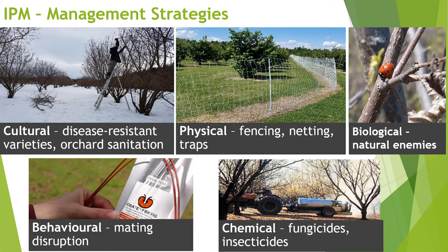Finally, there's chemical control — using fungicides, insecticides, and herbicides — and that is an element of the management strategies. But IPM involves pulling all of these strategies together to create a management program that reduces pest populations to an acceptable level while reducing reliance on chemicals alone. Not no chemicals, but just having them be one of many strategies we're using in the orchard.